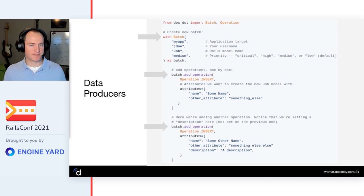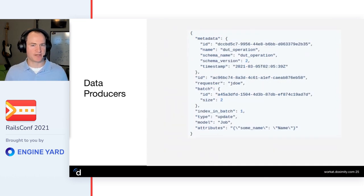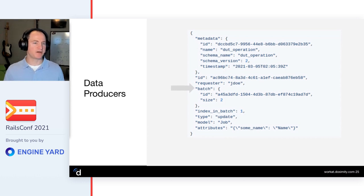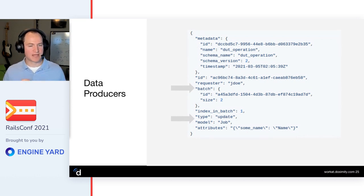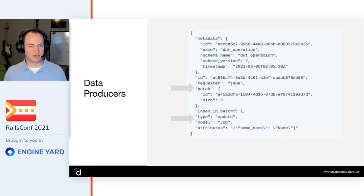The messages produced end up looking something like this. After running the script, it'll produce a bunch of messages. We have the batch with its ID and size - in the previous slide we created two operations so this batch has two. We have the index of the update in that batch, a type which is an update, and a model which is the job. So we've given in this operation all of the context needed - how to find the model and update it properly.